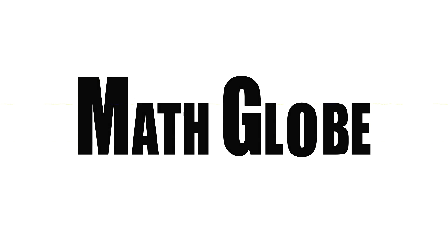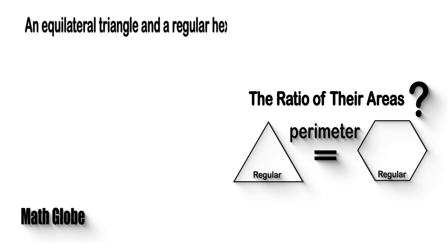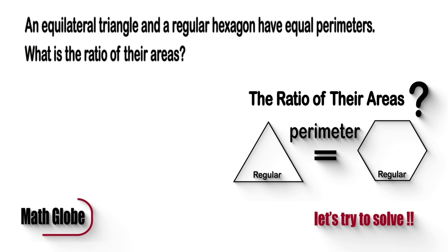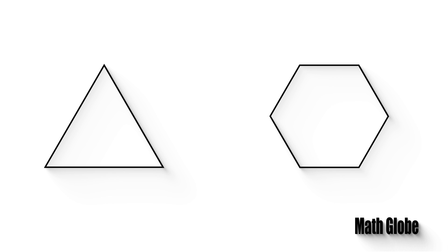Hi, this is mathglobe. An equilateral triangle and a regular hexagon have equal perimeters. What is the ratio of their areas? Let the solution come. As given in the question, an equilateral triangle and a regular hexagon have equal perimeters.